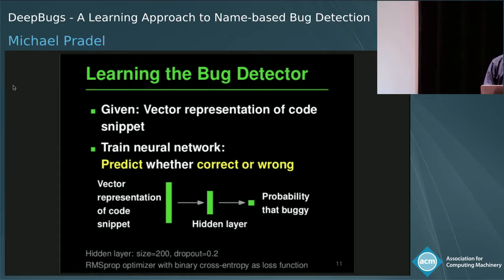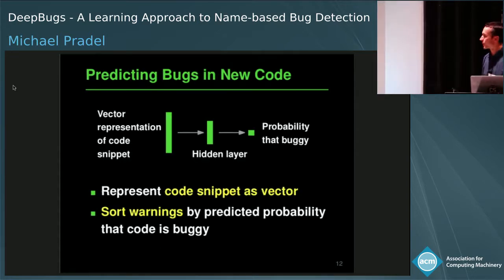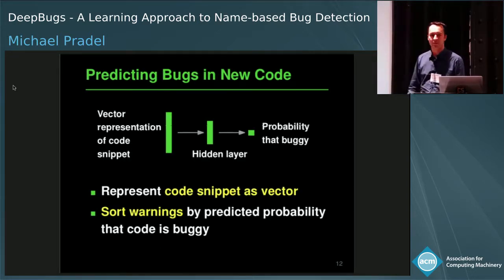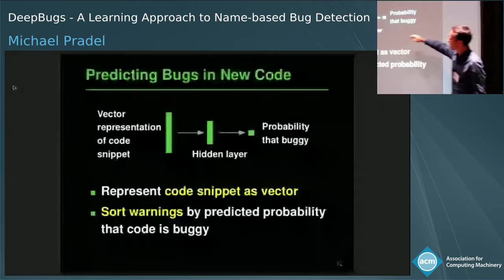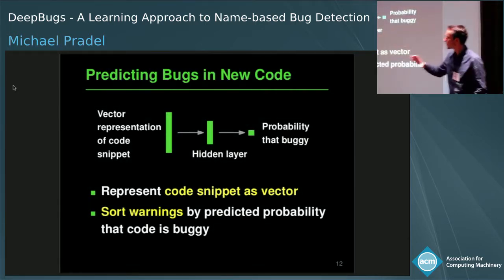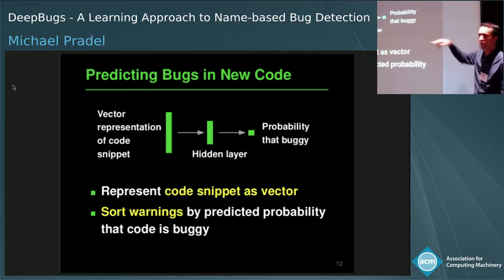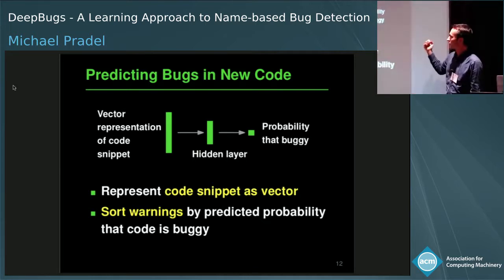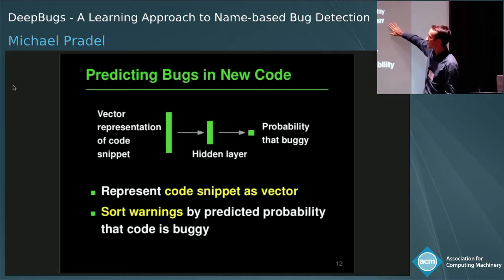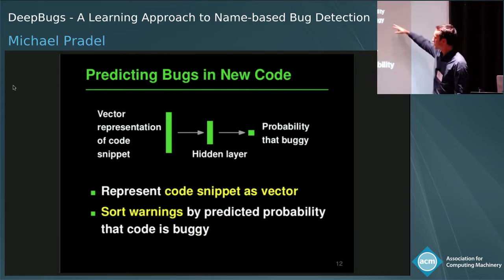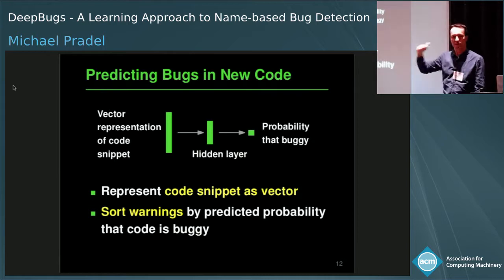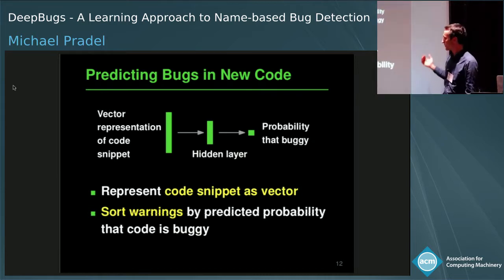Once we have the trained bug detector, we use it to predict bugs in previously unseen code by representing the new code the same way, feeding it into the trained network, and getting a probability that the code is buggy. We can use this probability to sort warnings before reporting them to the user, so those with the highest probability are reported first.